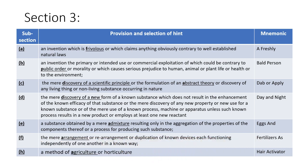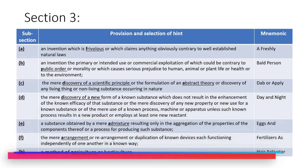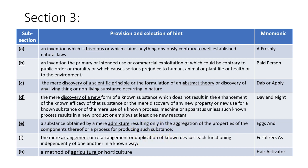For subsection B, I have selected the hint word 'public order.' For subsection C, I have selected 'discovery of a scientific principle or an abstract theory' — the hint characters would be D and A. For subsection D, I have selected 'discovery of a new' form, use, or property of a known substance, so 'new' is an important word. For subsection E, 'admixture' is the hint. For subsection F, 'arrangement' is the hint word, giving hint character A. Note that G is a missing subsection — there is no subsection G. For subsection H, I have selected 'agriculture' as the hint word. The mnemonic formed is: 'A freshly bald person, dab or apply day and night, eggs and fertilizers as hair activator.' This sentence doesn't make any sense, but it should help you remember the provisions in a slightly better manner.